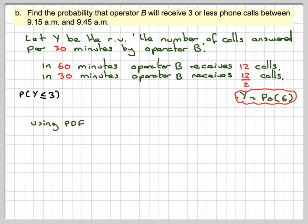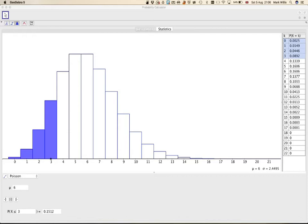Using the PDF on GeoGebra, I've already set this up. We want less than or equal to 3, so we would have to sum all those probabilities.